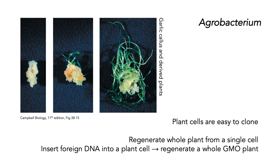One way to make genetically modified plants is to use a bacterium called agrobacterium. Plant cells are very easy to clone, which makes them quite different from animal cells. It is possible to take a single cell from a plant and regenerate an entire plant from that one cell. So you could theoretically insert foreign DNA into a plant cell and regenerate an entire genetically modified plant. What we're looking at in these pictures is on the left a callus — in this case from garlic — which are undifferentiated cells. In picture two, you're starting to see them begin to differentiate, with leaves emerging. And in picture three, you're seeing entire plants with leaves and roots.